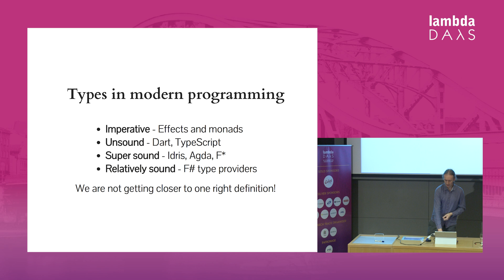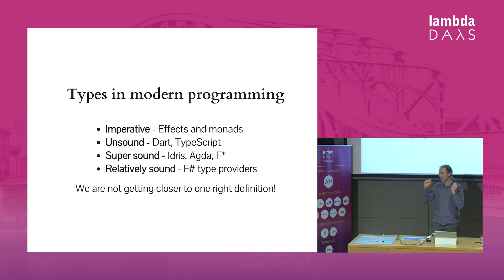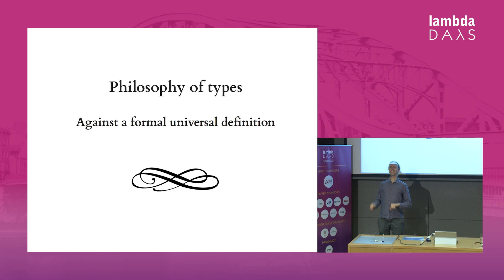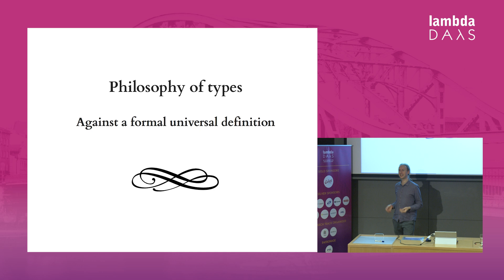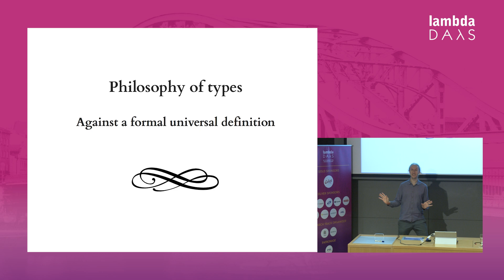The key message for the first part is it doesn't look like we're getting closer to any sort of clear, precise definition. And the second part of the talk is: it doesn't matter. There's a lot of interesting literature on philosophy of science and philosophy of mathematics. If you got intrigued by Phil Wadler's question whether things are discovered or invented, you should read something about philosophy of mathematics, because that's like the biggest problem in the whole field. People can solve it on Twitter, but I don't think they will capture the full complexity of the topic.